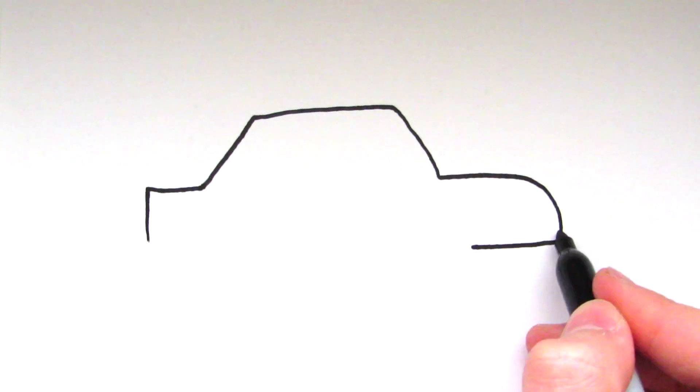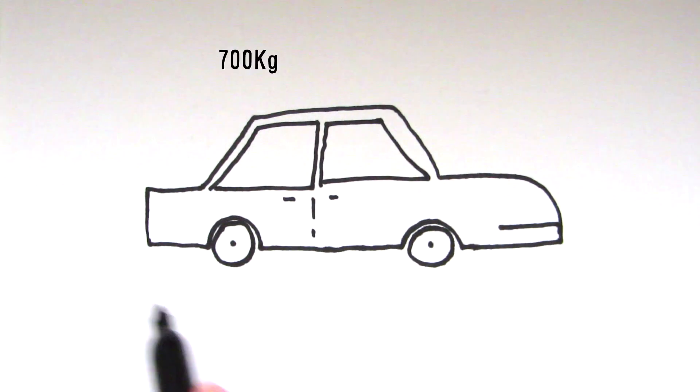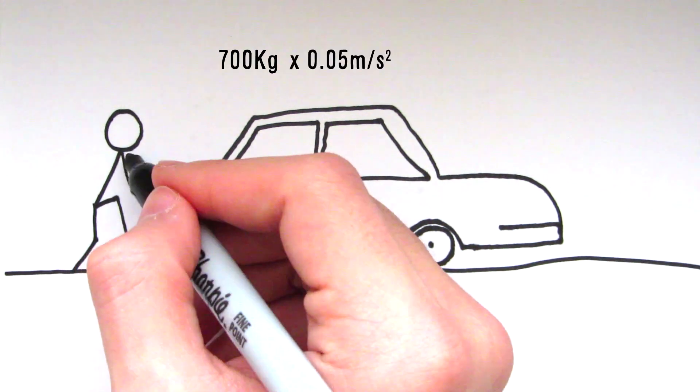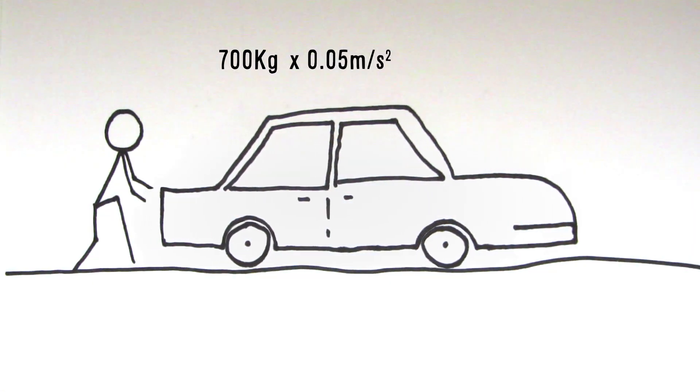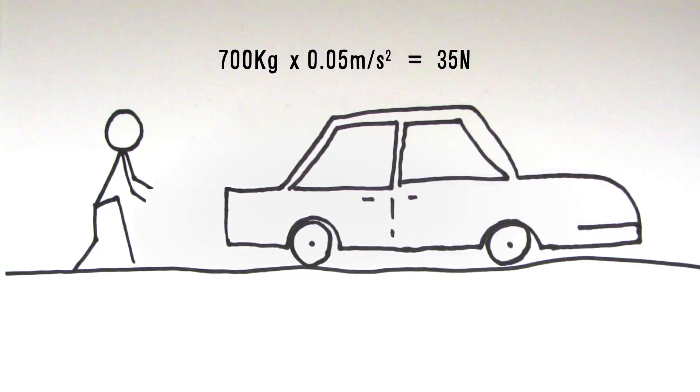For example, if a car has a mass of 700 kilograms and the driver pushes the car with an acceleration of 0.05 meters per second squared, then the force applied was 35 newtons.